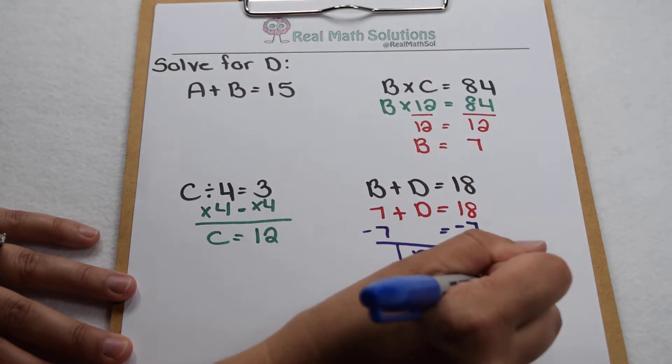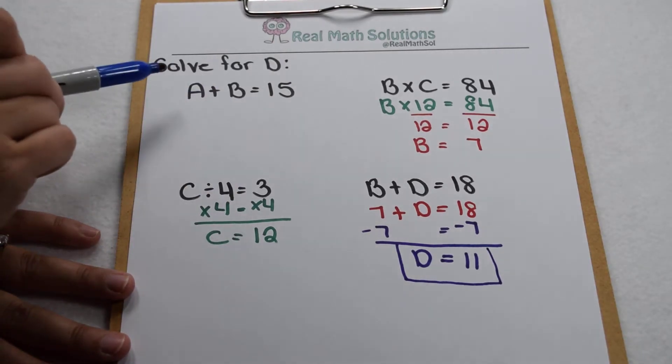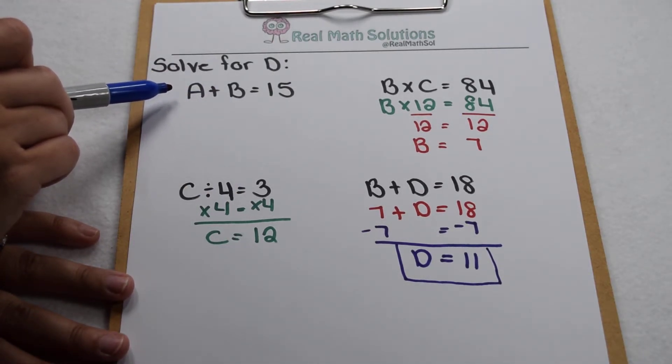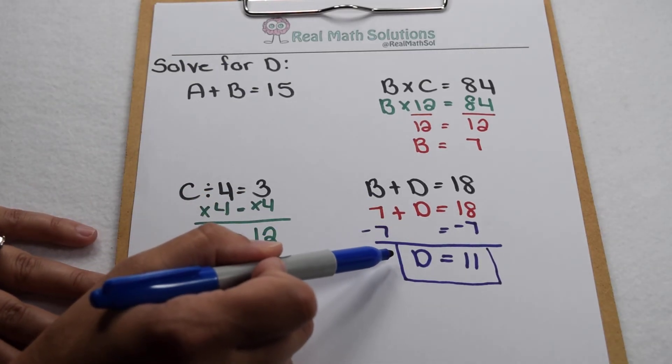So at the end of the day, we found that d equals 11. We could have used this expression if we wanted to, but since we don't need a at the end of the day, we really don't have to because we still know that d is equal to 11.